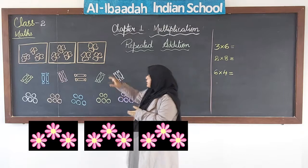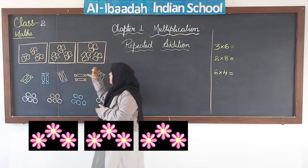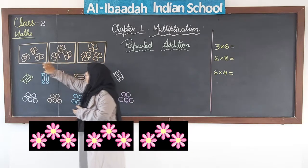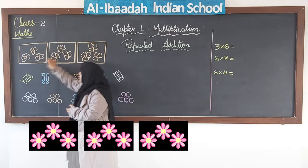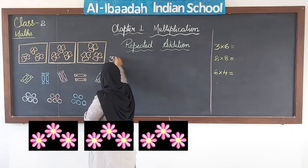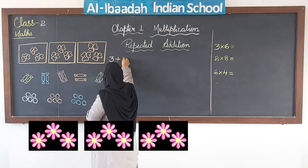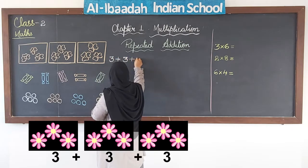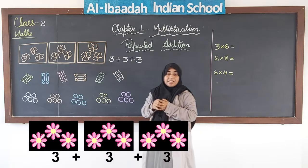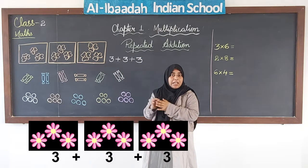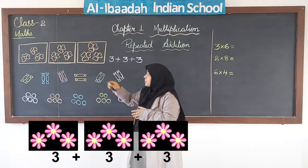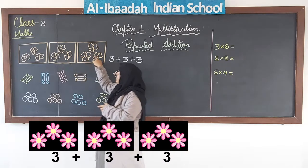The first group I have is of 3 flowers — 3 flowers in each group. You can see there are 3 flowers here, 3 here, and 3 here. So if I have to add them it will be 3 plus 3 plus 3. I am adding 3 times, so it will be 9 — 3 plus 3 is 6, and 6 plus 3 is 9.